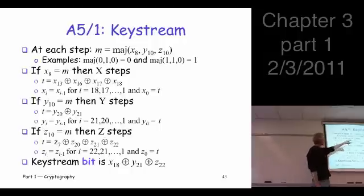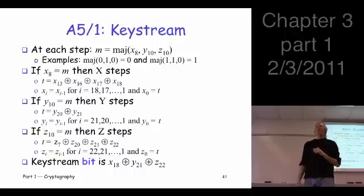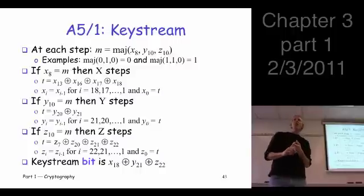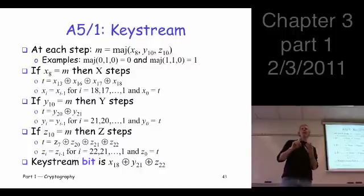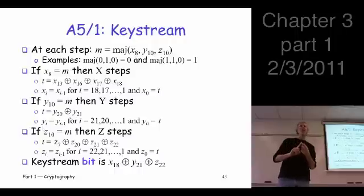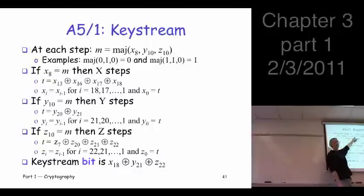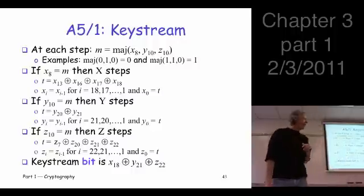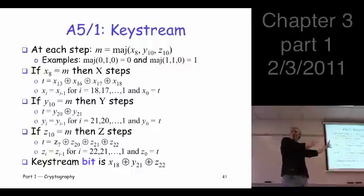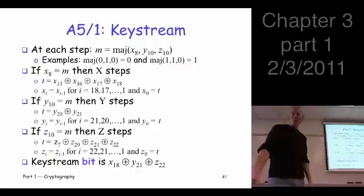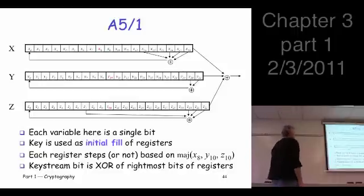I want to define the majority vote function. It takes three bits and tells you the majority — either zeros or ones. Since there are three, it can't be a tie; it has to be more zeros or more ones. For example, majority of 0,0,1 is zero; majority of 0,1,1 is one. Let's look at the picture — I like the picture much better.